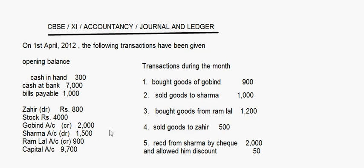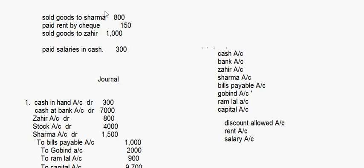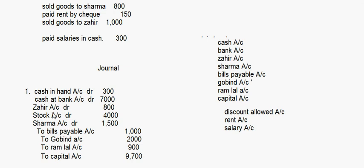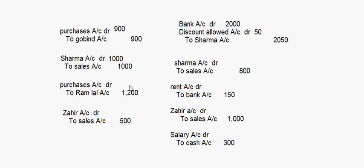We will now continue with this question which we took up in our last session. We prepared the journal entries in the last session, so now we have to prepare the ledger accounts. The accounts to be prepared are: cash account, bank account, Zahir account, stock account, discount allowed account, salary account, and rent account.